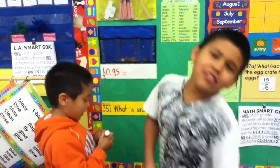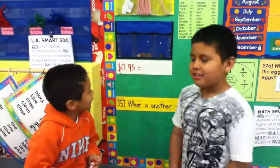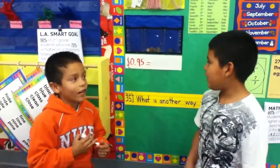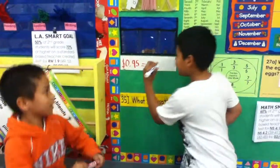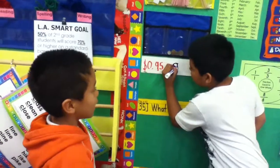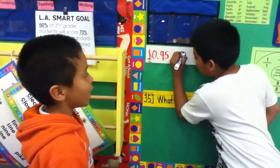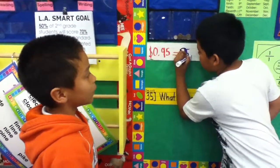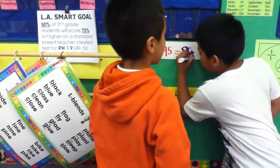Another way to write 95 cents is: nine, five, with the cent sign.